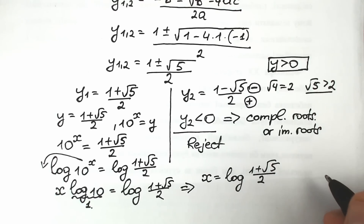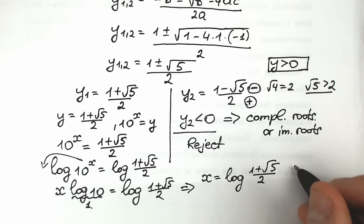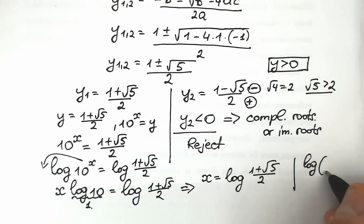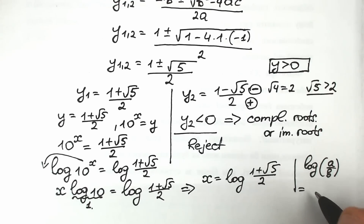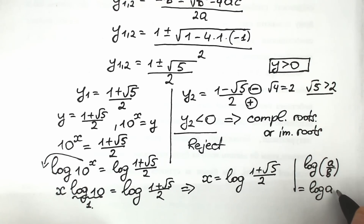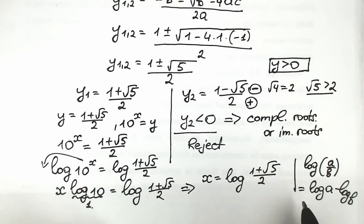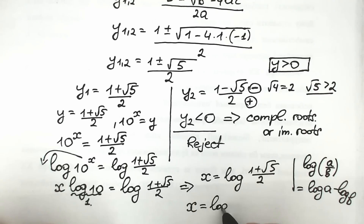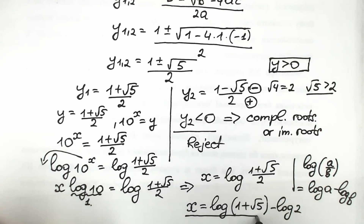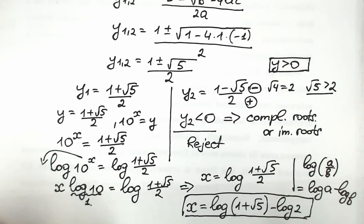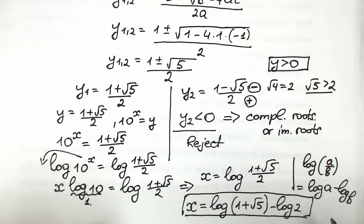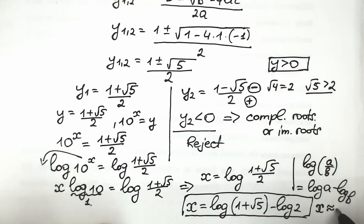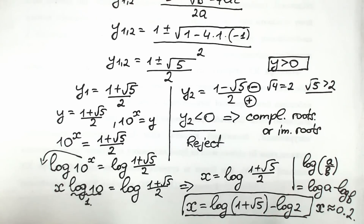We apply the log quotient rule: log(a over b) equals log a minus log b. So our final answer is: x equals log(1 plus square root of 5) minus log 2. Approximately, x is equal to 0.2. You can easily verify this answer in your calculator or math library — it will be a really interesting check.